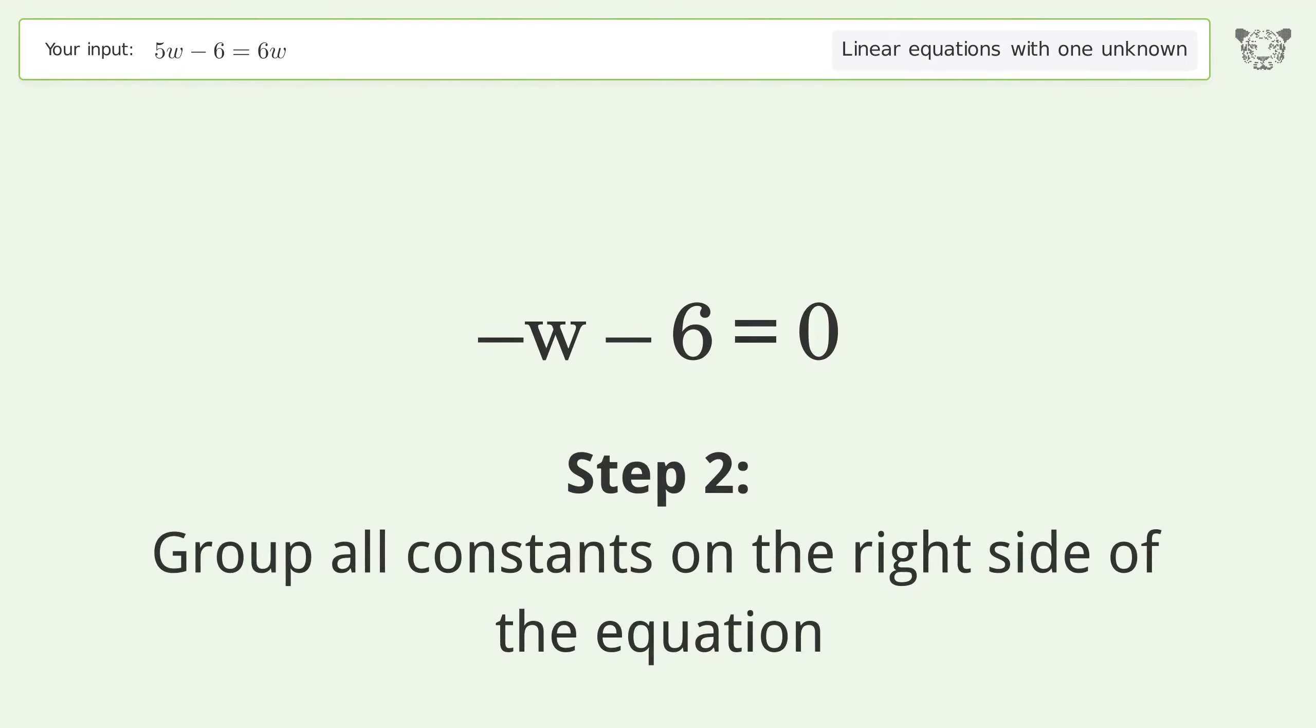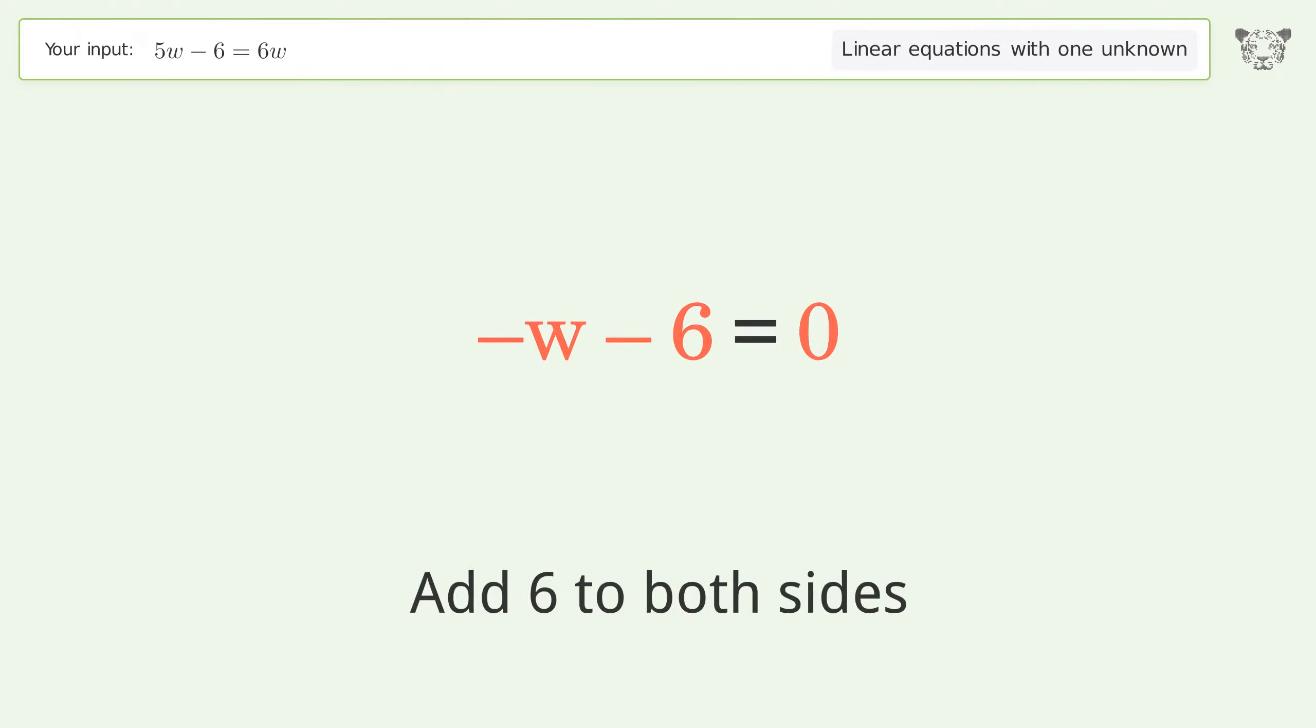Group all constants on the right side of the equation. Add 6 to both sides. Simplify the arithmetic.